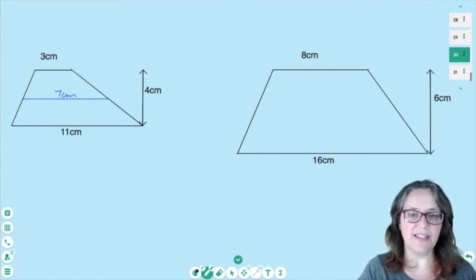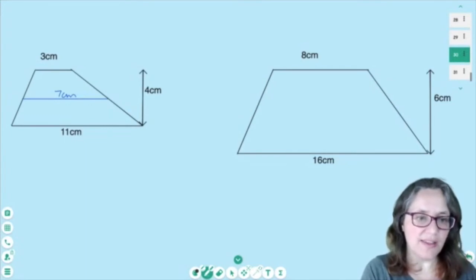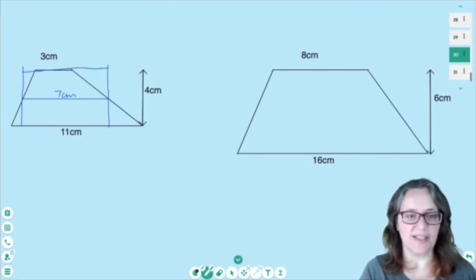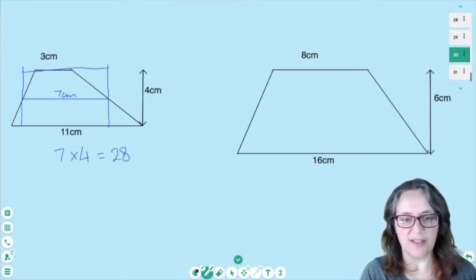So we're finding that distance across the middle and then saying I want to find a rectangle that is 7 cm across and 4 cm tall because that would be the perfect size for me. So 7 times 4 equals 28 cm squared.